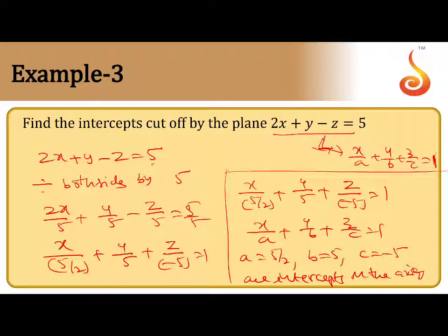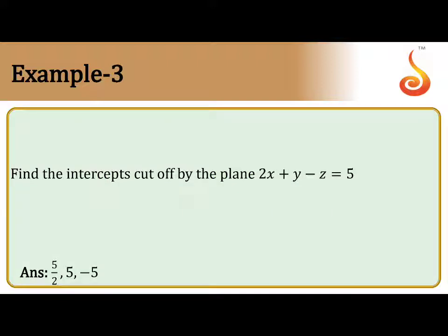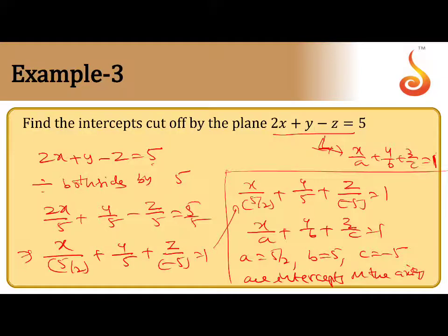Divide by 5 to get the right side equal to 1: 2x/5 + y/5 - z/5 = 1. Now rewrite 2x/5 as x/(5/2), giving x/(5/2) + y/5 + z/(-5) = 1. Compare with the intercept form and get a = 5/2, b = 5, c = -5. So the intercepts are 5/2, 5, and -5.